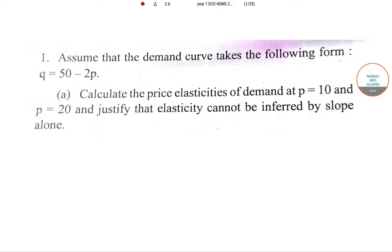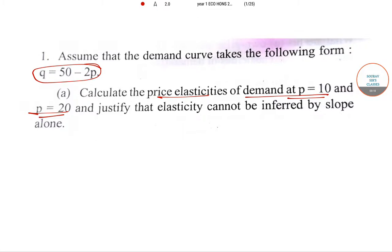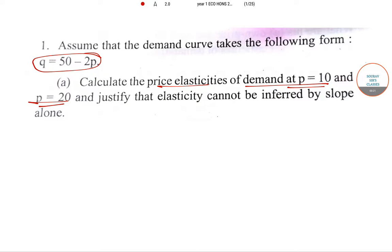The first question: assume that the demand function takes the following form Q = 50 - 2P. We have to find the price elasticities of demand at P = 10 and P = 20, and justify that elasticity cannot be inferred by the slope alone.